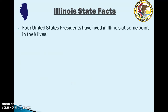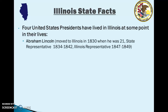There are four United States presidents who have lived in Illinois at some point in their lives. First, Abraham Lincoln — he moved to Illinois in 1830 when he was 21. He was a state representative and an Illinois representative before he became president. Ulysses S. Grant moved to Galena in 1860 when he was 38.